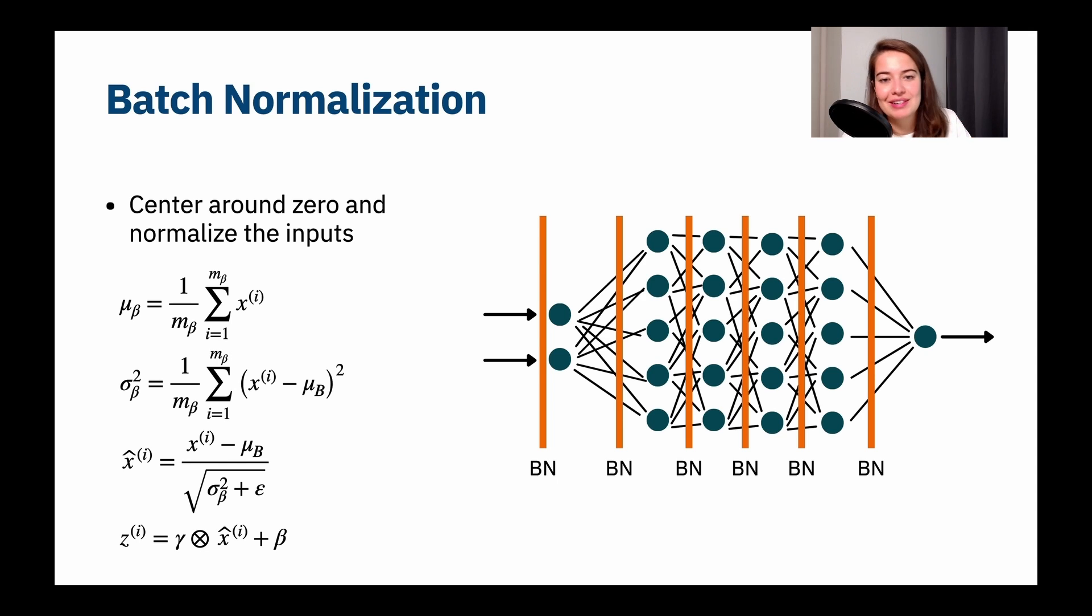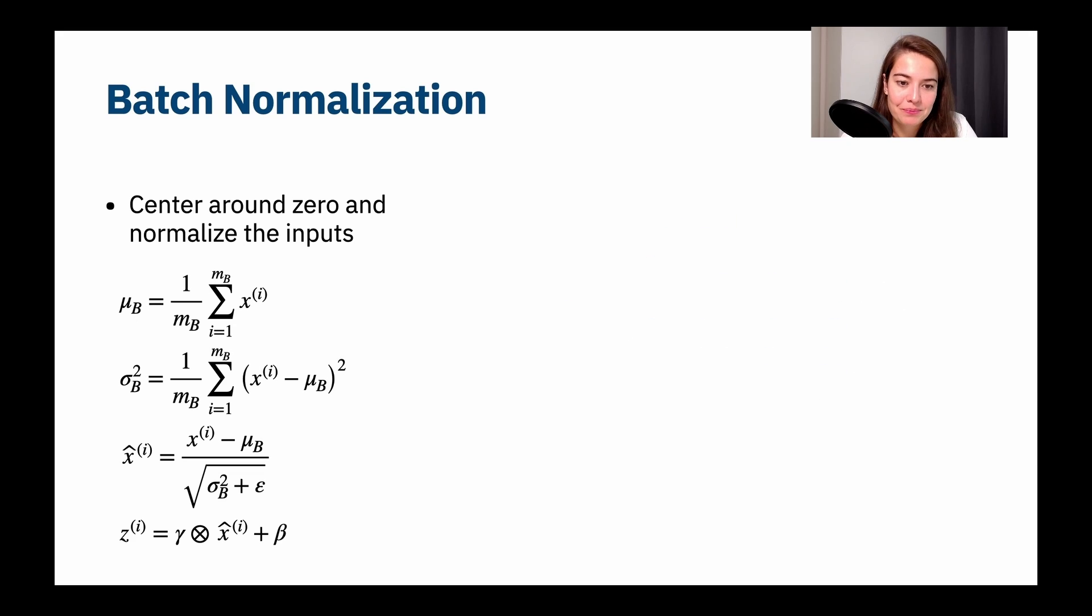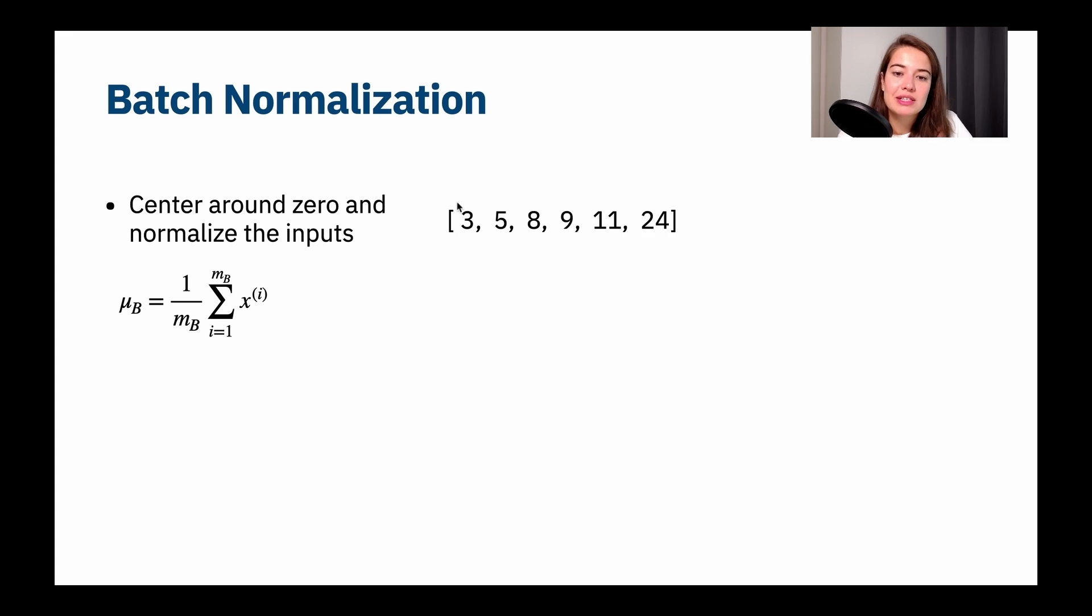Okay, so for the scary part, this is how batch normalization works. But this is much, much simpler than how it looks. So let's start. The first thing that we want to do, of course, is to find the mean. So let's say we have this group of numbers. These are our inputs: three, five, eight, nine, 11, 24. What I want to do is find their mean. Very simple. Basically, what this means is what I wrote down here. I find their mean, I sum all of them, and I divide them by the number of values that I have.